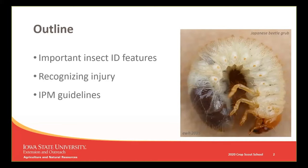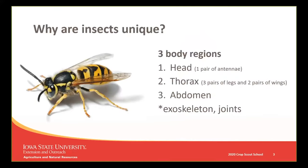First off, we're going to start real basic: why are insects unique? They're different from all other animals for a few reasons, and the biggest one is that they have three body regions. That's going to distinguish them from closely related animals like the arachnids — spiders and mites — as well as things like millipedes, centipedes, and crustaceans.